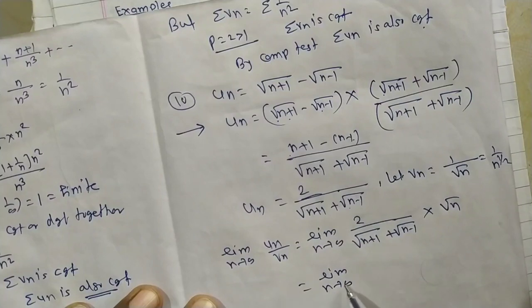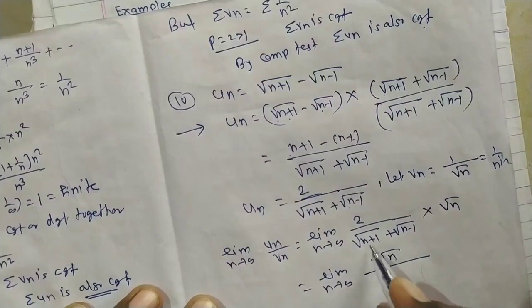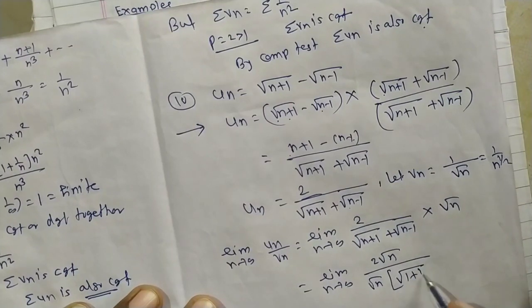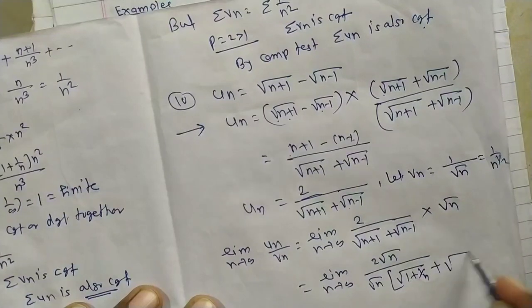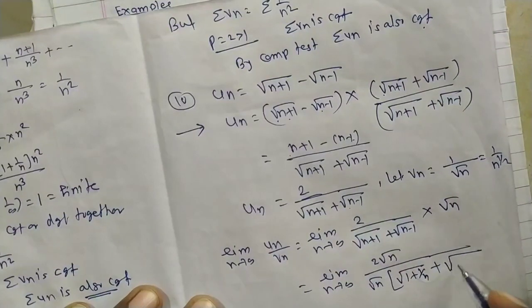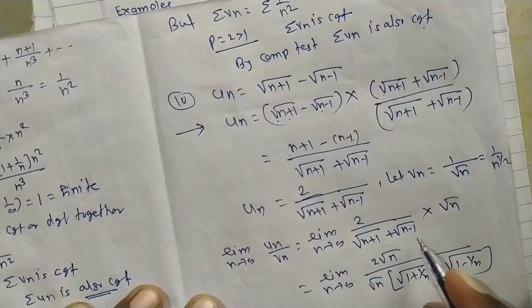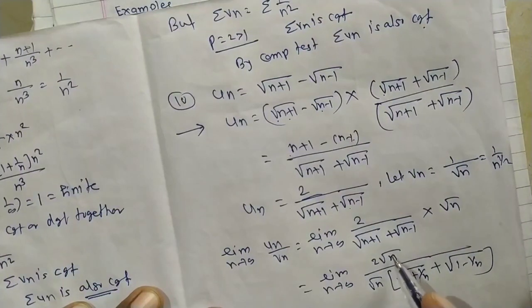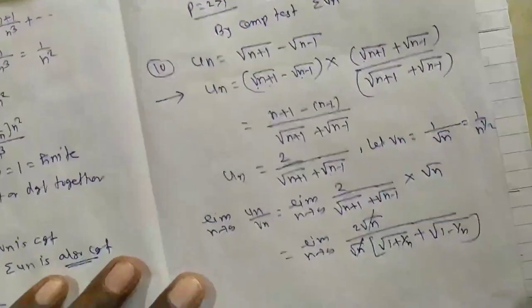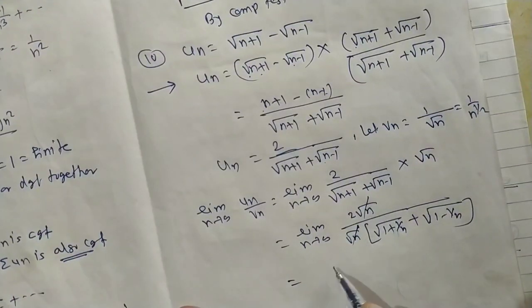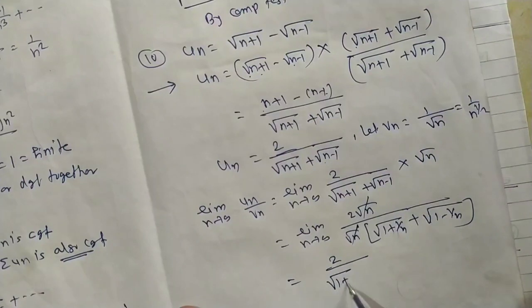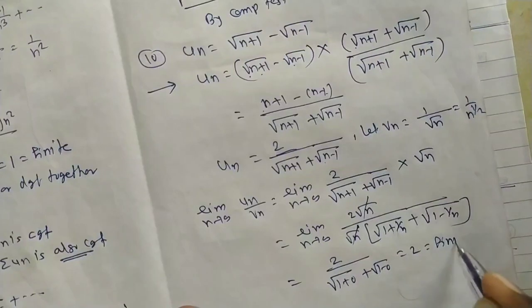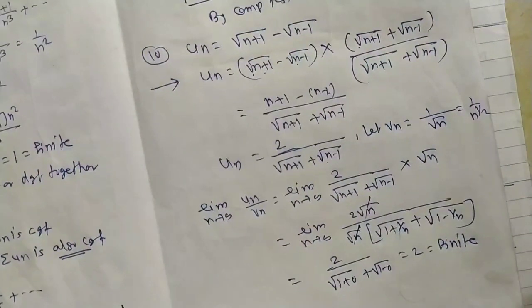Limit of un/vn = lim[2/(√(n+1)+√(n−1))] × √n. Taking √n common in denominator: √n·[√(1+1/n) + √(1−1/n)]. The √n·√n = n cancels, giving limit = 2/(√1 + √1) = 2/2 = 1. This limit is finite.